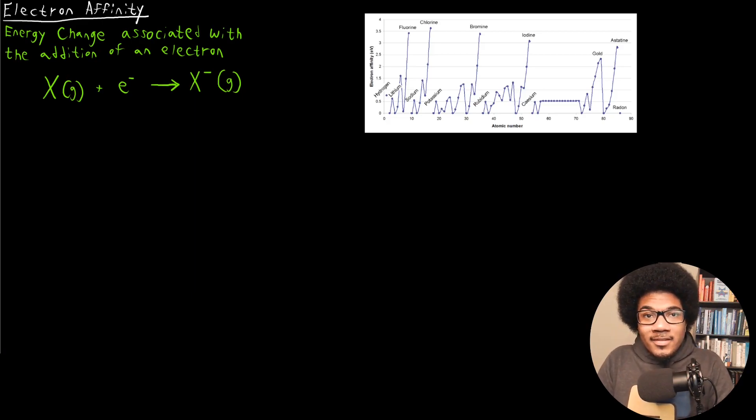In this video we're going to discuss electron affinity. In the previous video we talked about ionization energy, which was the energy associated with the loss of an electron. Now the electron affinity can be thought of as the opposite process. This is the energy change associated with the addition of an electron to an atom.